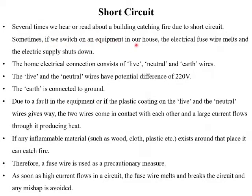Sometimes if we switch on an equipment in our house, the electric fuse wire melts and the electric supply shuts down. If we have fuse wires for various electrical appliances that function on high electric energy — like refrigerator, TV, or microwaves — we can avoid such accidents. The electric fuse wire is made out of a low melting point alloy of lead and tin, so even if excess current flows, the fuse wire melts and breaks the circuit, preventing damage to the person and the equipment, and averting accidents like short circuit.